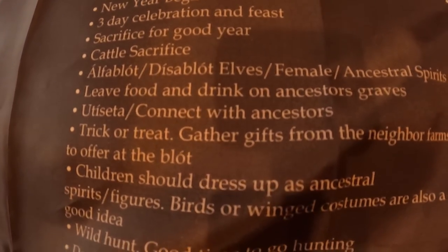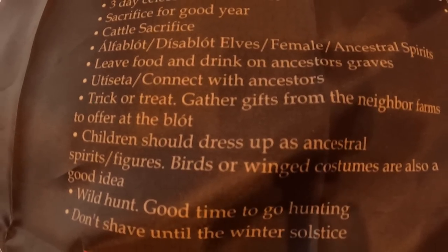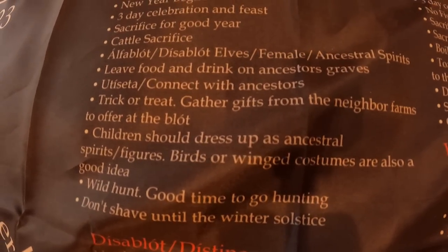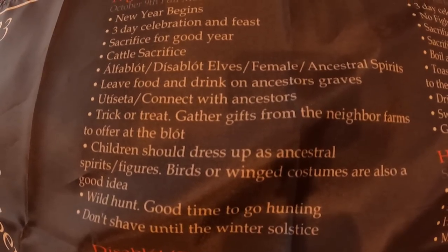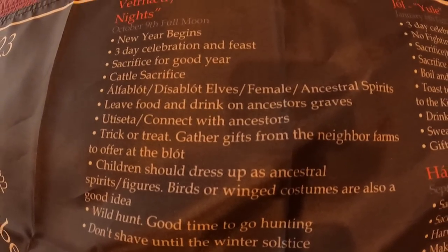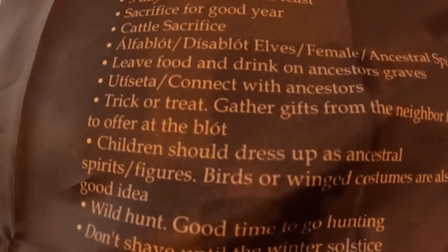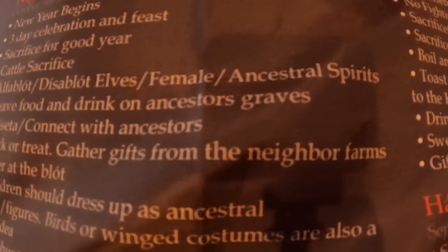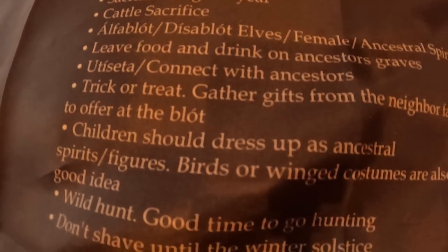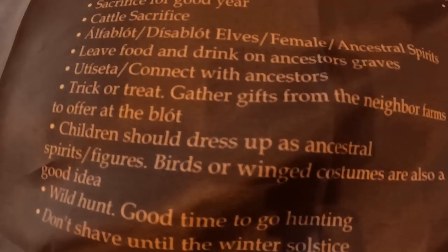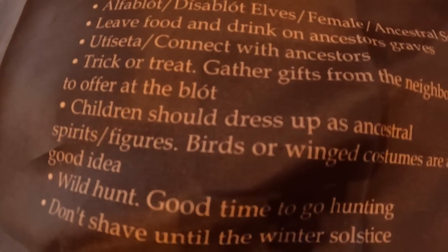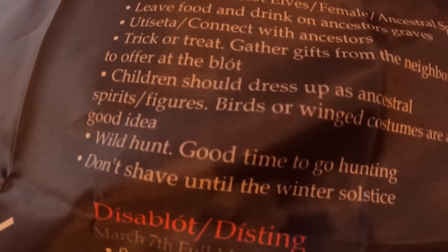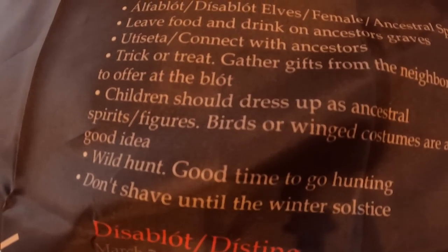All over the world this is a time to honor the ancestors, and we have records in Scandinavian folk tradition of doing this until just about 200 years ago. You can leave food and drink on the ancestors' graves. You can practice Útiseta, or connect with ancestors. You can do trick-or-treating — gathering gifts from neighboring farms to offer at the sacrifices. This could be the origin of trick-or-treating. Children should also dress up as ancestral spirits or ancestral figures, and even bird or winged costumes, as ancestral spirits are sometimes believed to take the shape of birds in the afterlife.